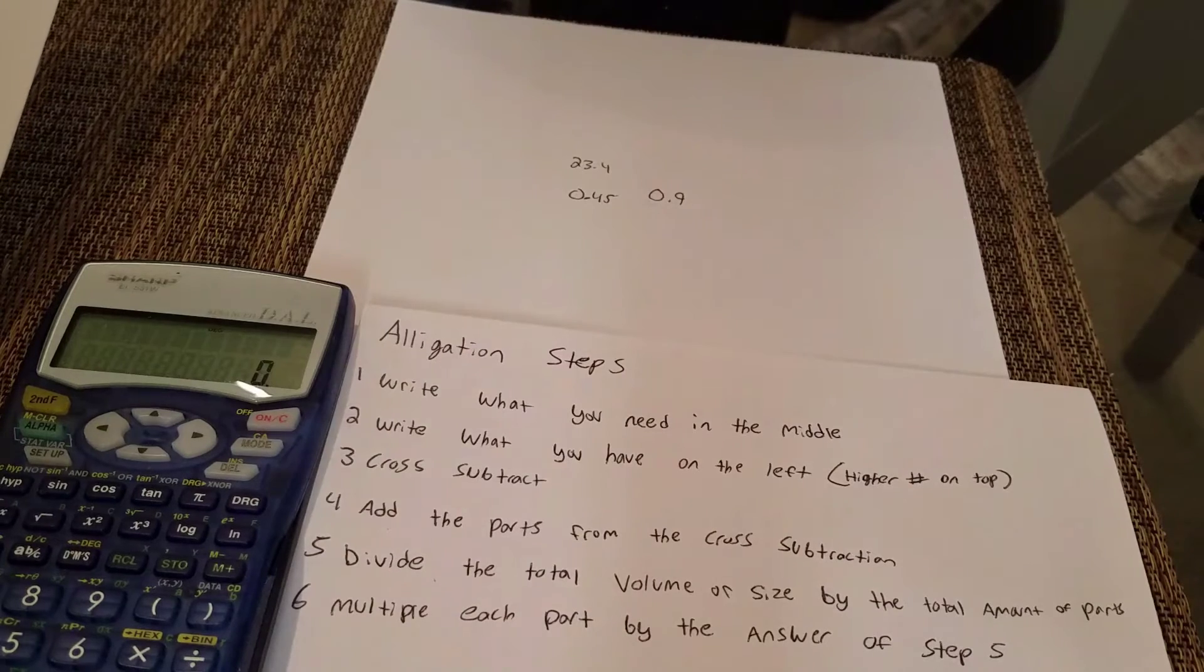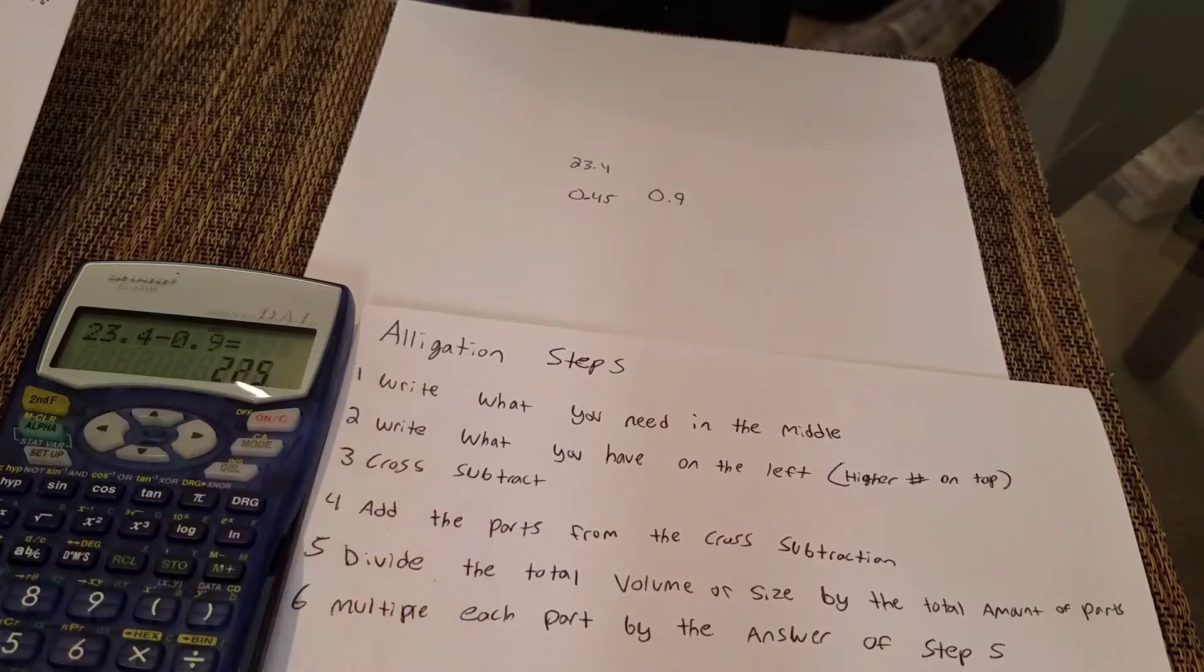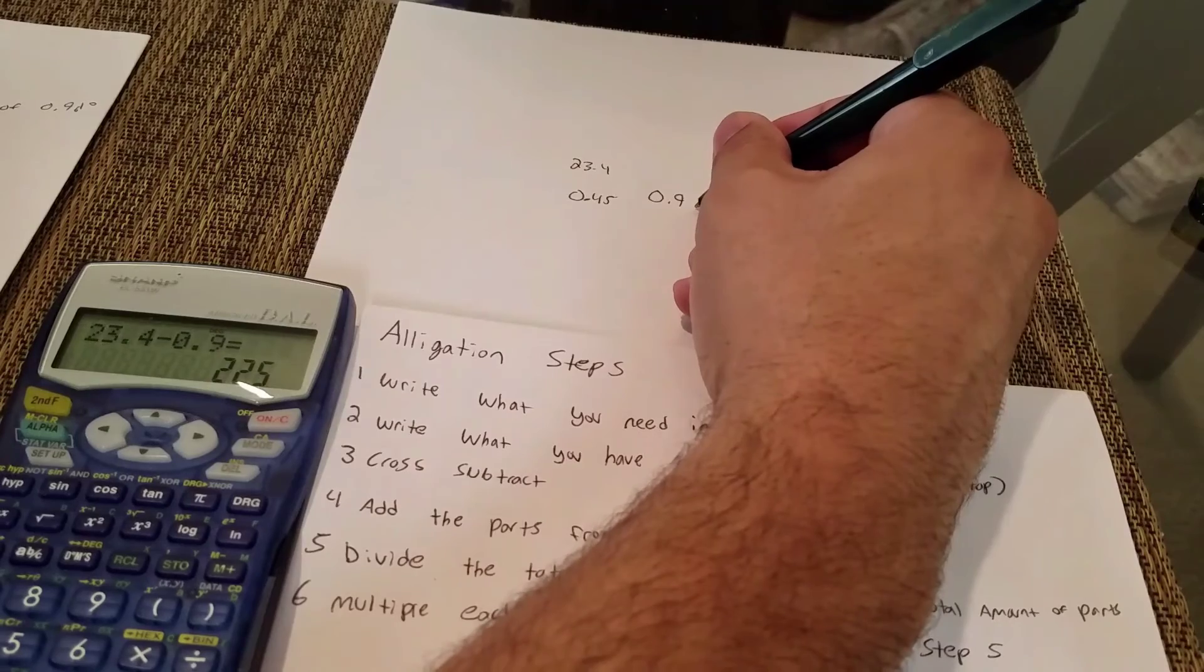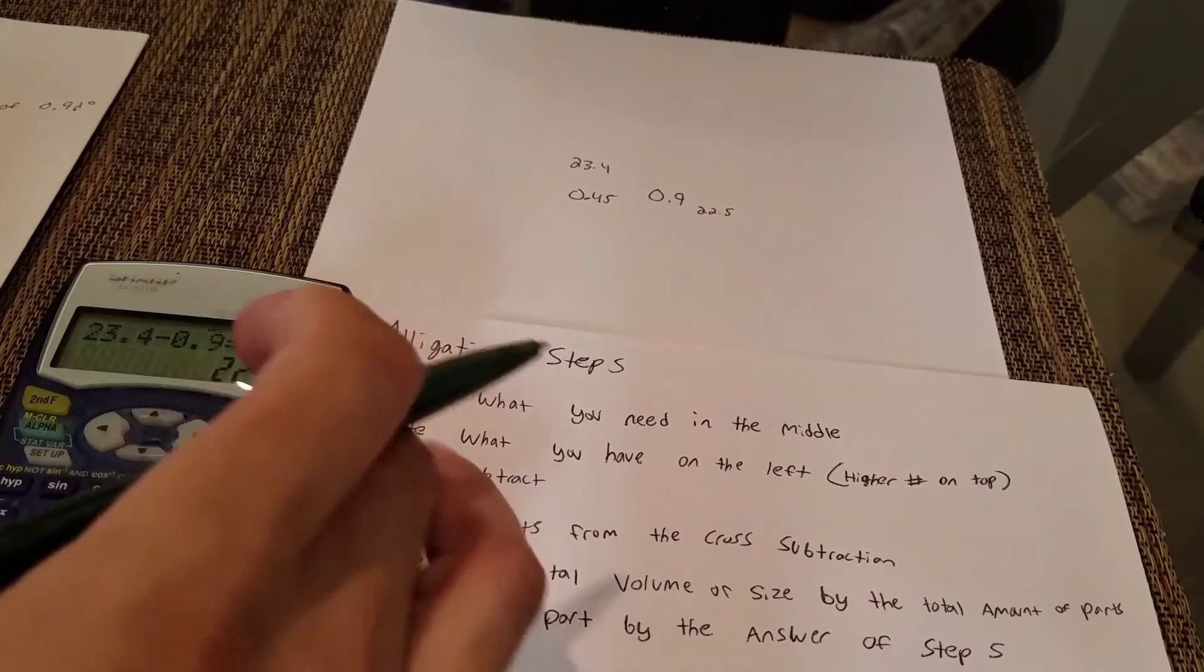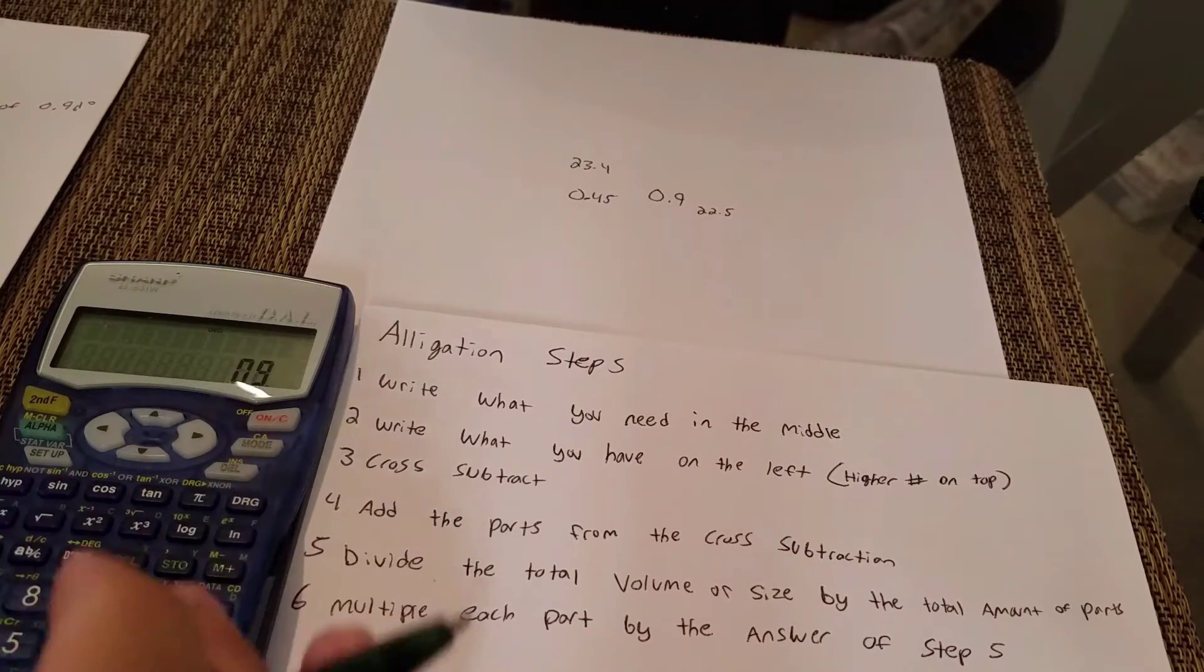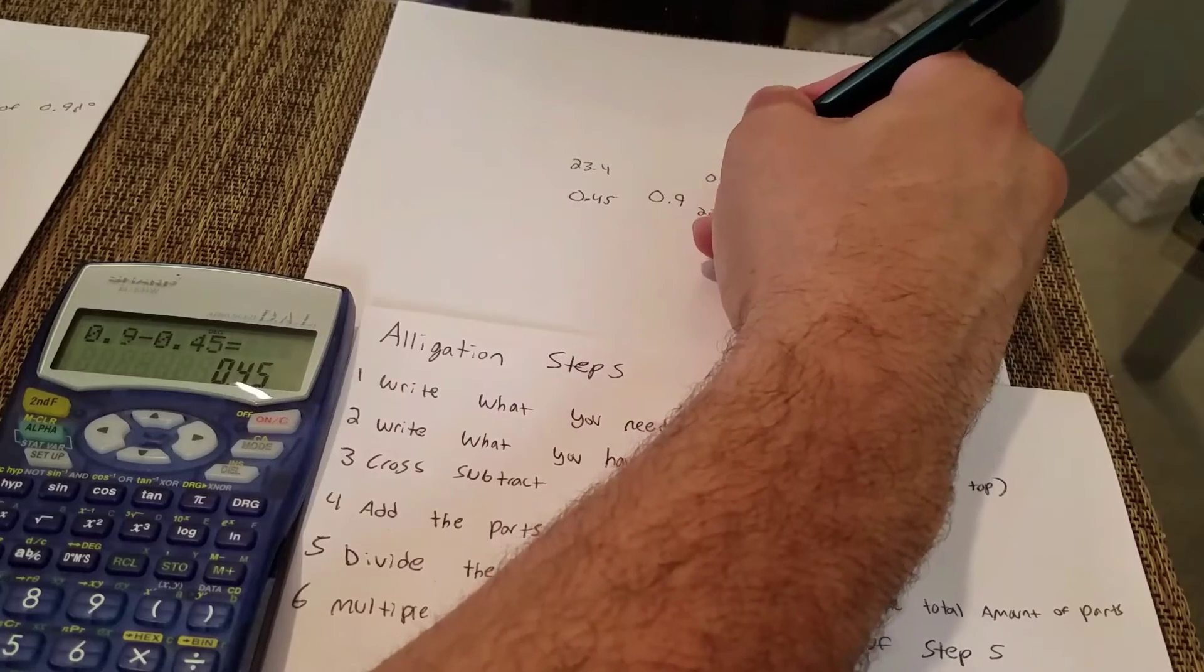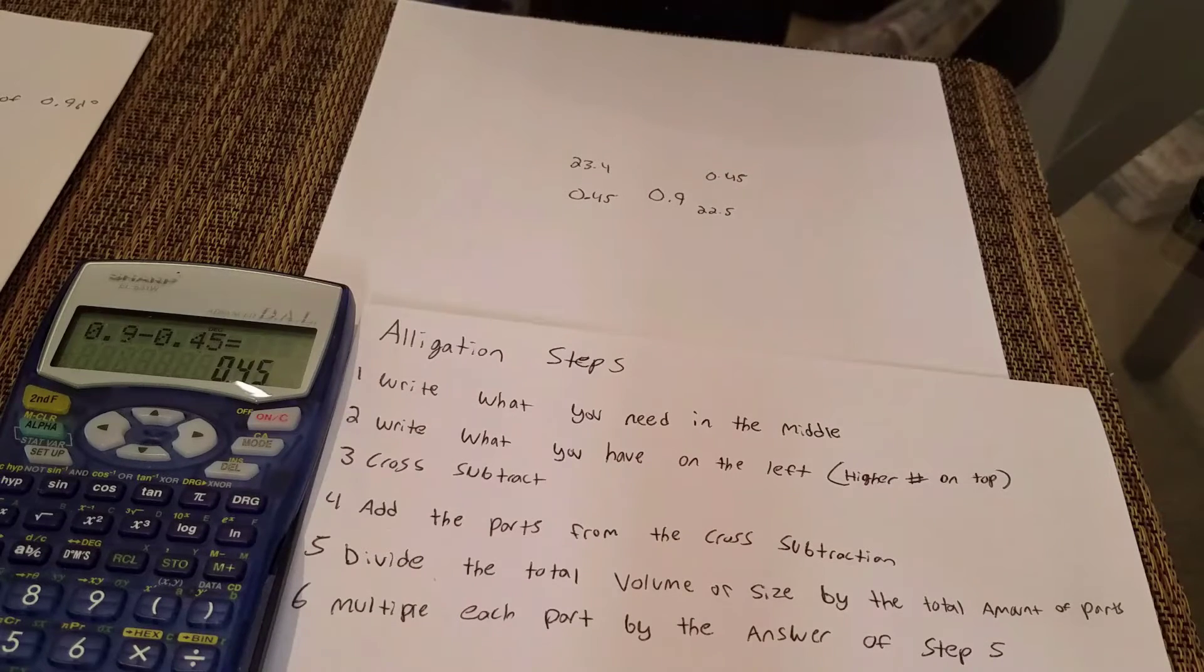The next step says cross subtract. So I'm gonna take 23.4 minus 0.9, which equals 22.5. So I'm gonna carry the 22.5 down here across. And then I need to subtract 0.45 from 0.9. Make sure you take the higher number first and then subtract, so I'm gonna do 0.9 minus 0.45. The answer is 0.45. The numbers that you get on the right hand side, those are called parts - those are parts of each that you're gonna need to make the normal saline.